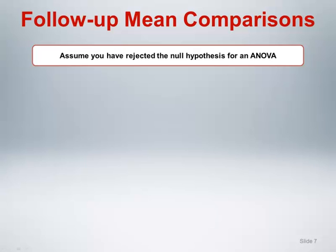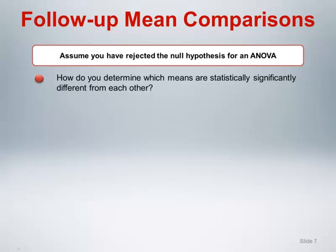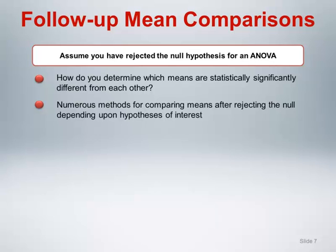Let's assume you have rejected the null hypothesis for an analysis of variance. How do you determine which means are statistically significantly different from each other? It turns out that there are numerous methods for comparing means after rejecting the null hypothesis, depending on the specific design of the study and the hypotheses of interest. Entire books are written about this subject. The key point to be aware of is the proliferation of error and making sure that the follow-up mean comparisons are performed in a way that preserves type 1 error rates.